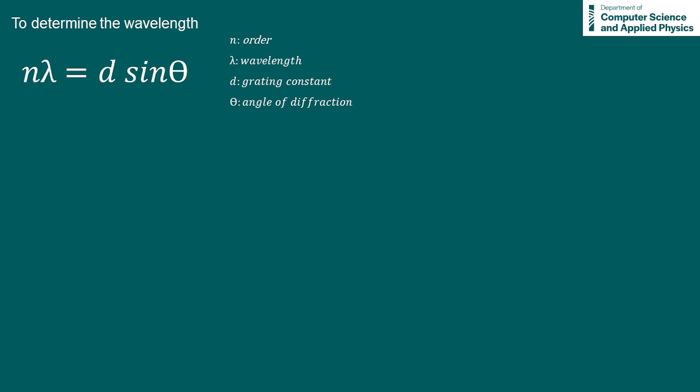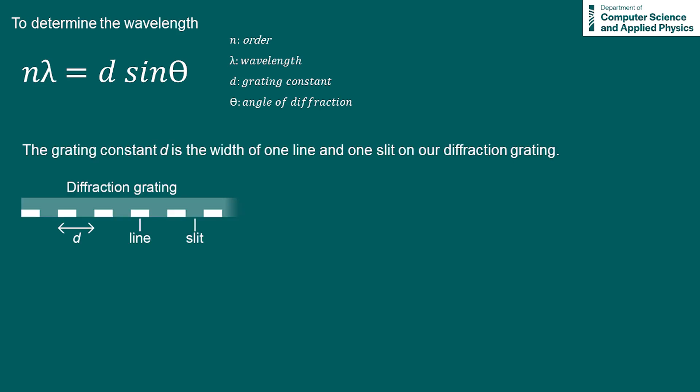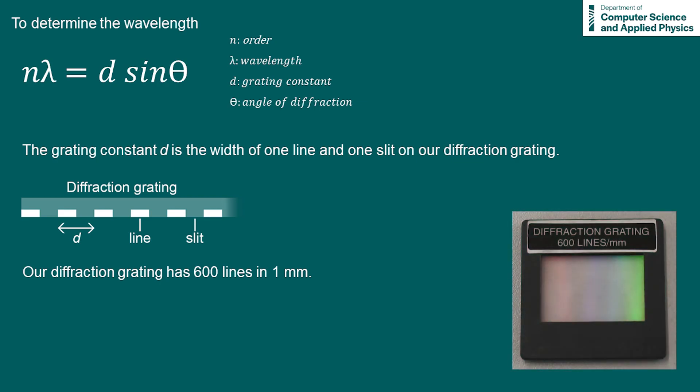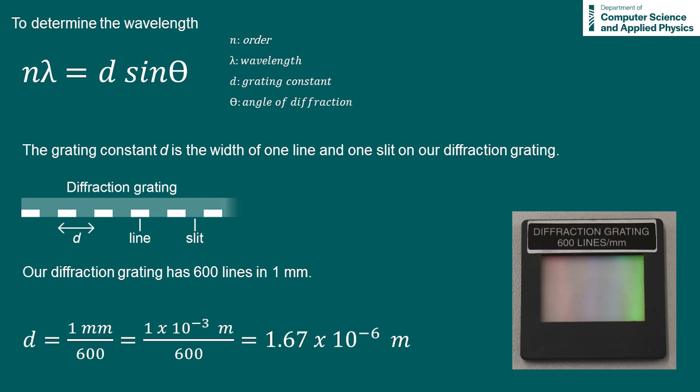To determine the wavelength of the laser, we will use a diffraction grating formula. D in this formula is the grating constant — it's equal to the width of one line and one slit on our grating. Our diffraction grating has 600 lines in one millimetre, so to calculate the value of D, it's 1×10⁻³ metres divided by 600, which equals 1.67×10⁻⁶ metres.